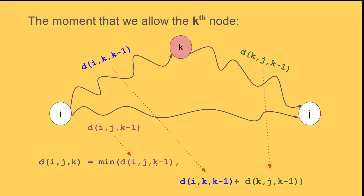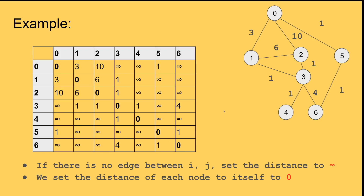Now let's see an example on a bigger graph. The first thing I do is create a matrix showing the edge weights between each i and j. For example, from 0 to 1 the weight is 3. I put zero on the diagonal to represent the distance from each node to itself, and infinity where there's no edge — for example between 0 and 3. This initial matrix is a direct translation of the graph; we haven't calculated anything yet.